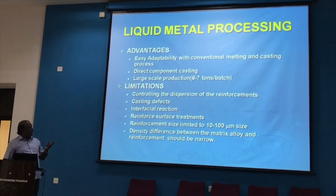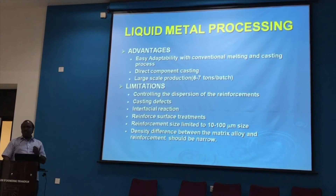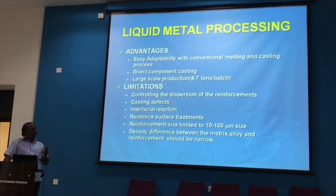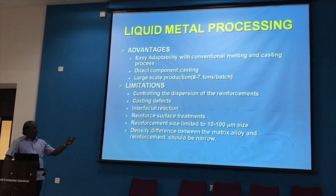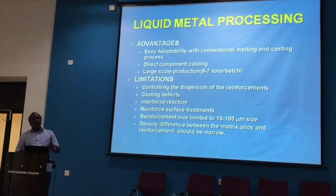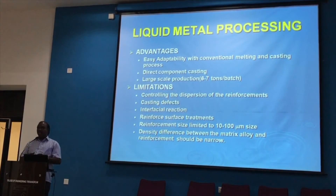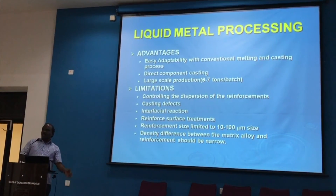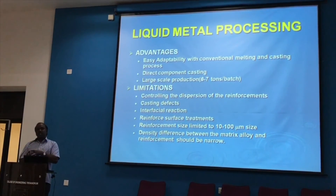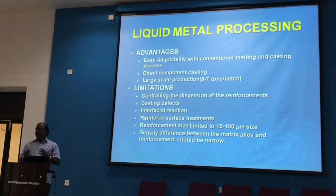If the reinforcement particle size is very fine, it becomes very difficult to add using stir casting techniques, and semi-solid processing routes are preferred instead. Additionally, the density difference between the matrix and the reinforcement must be kept narrow. For example, liquid aluminium has a density of about 2.6 g/cc — if you add a particle with density significantly higher, it will immediately settle to the bottom. Particles with density above about 3.8 g/cc will definitely settle.